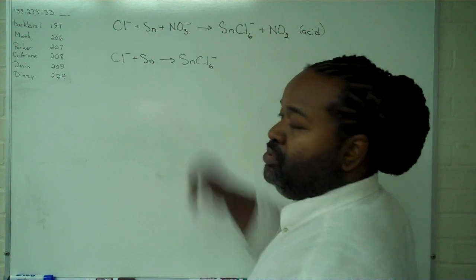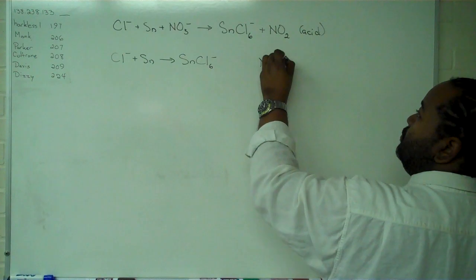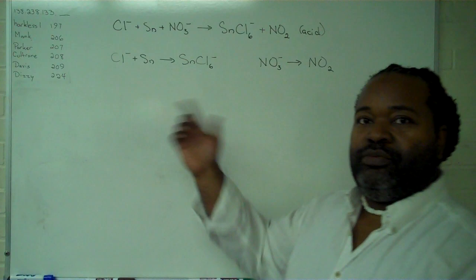Our second half reaction is going to be using the nitrogen. So by anchoring that to elements that appear on both sides, we have something that can be balanced.